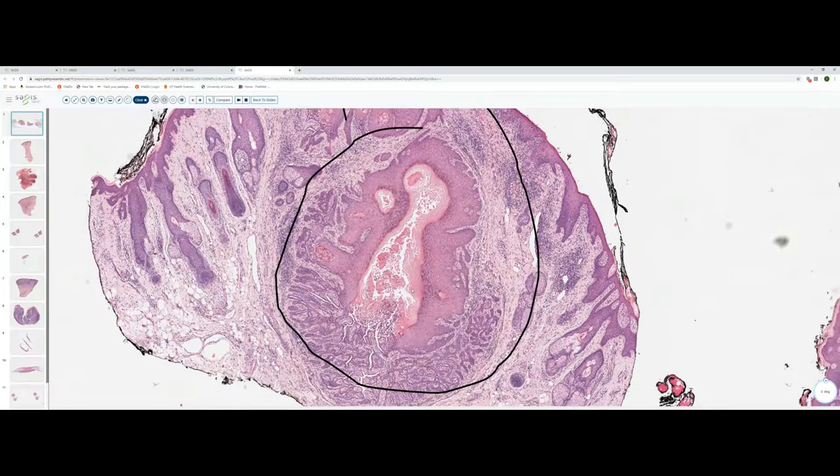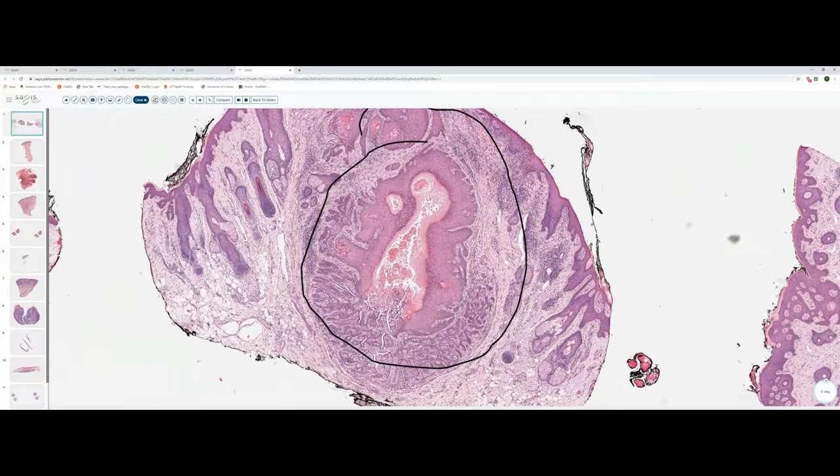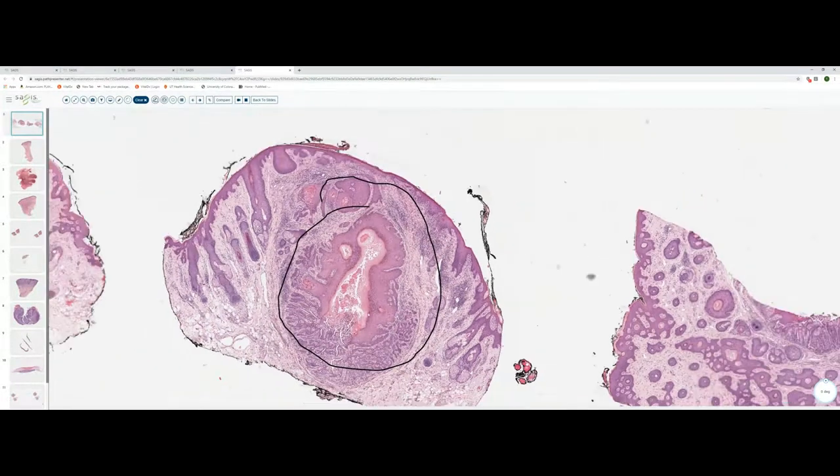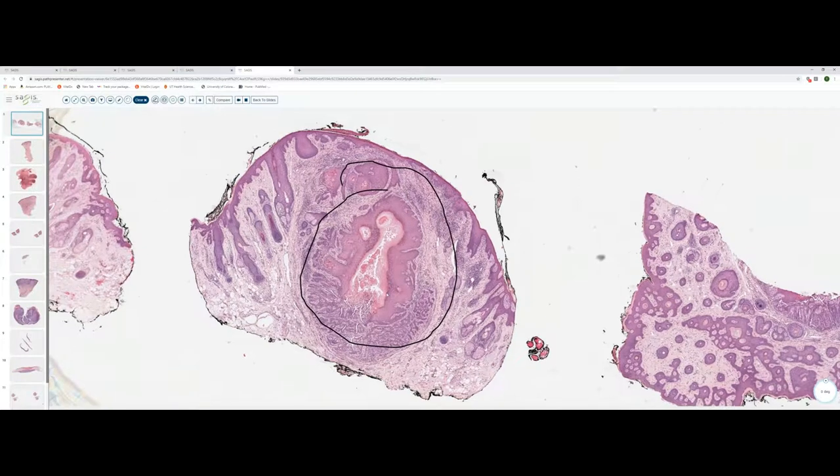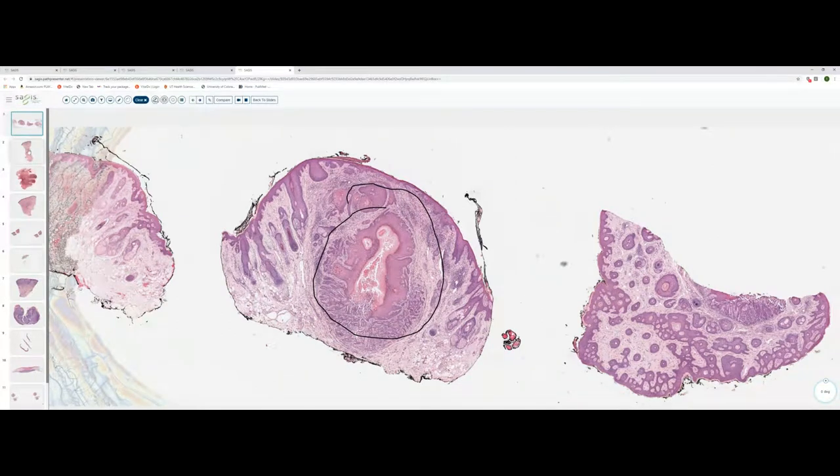And so this is a real-life example of a warty dyskeratoma. The item that I'll try and trick you up with on boards is an acantholytic squamous cell carcinoma. That tumor can also show acantholysis and dyskeratosis, but unlike a warty dyskeratoma, it will be characterized by quite a bit more cytologic atypia. So again, one of the take-home points of this slide is that the warty dyskeratoma is nothing more than that change of acantholysis and dyskeratosis or acantholytic dyskeratosis occurring in a cyst, a follicle, or occasionally in a dental structure.